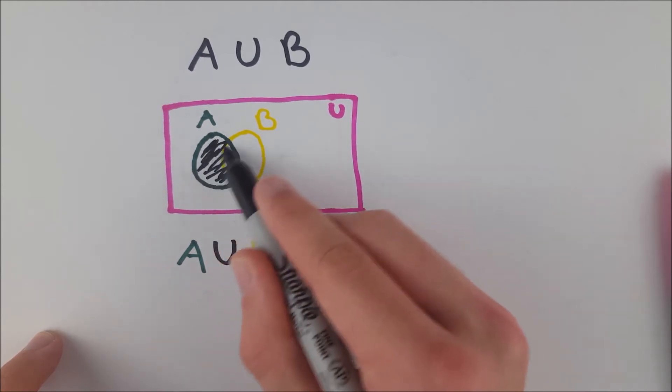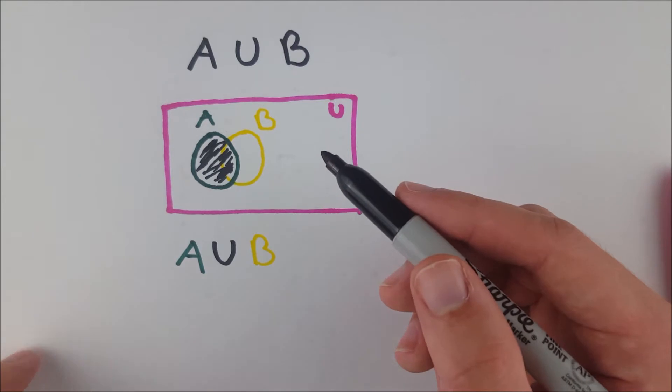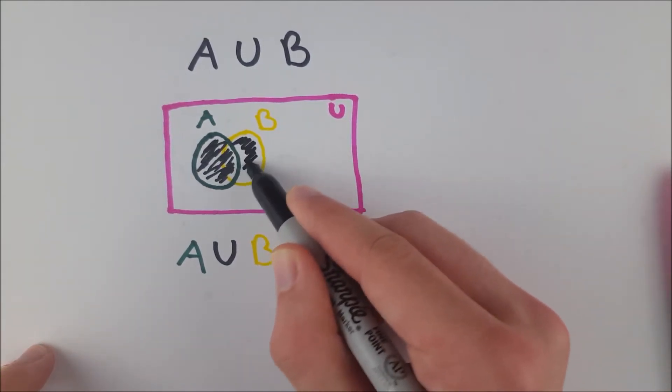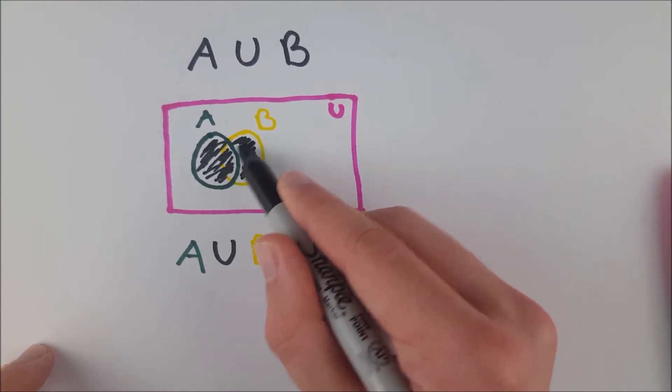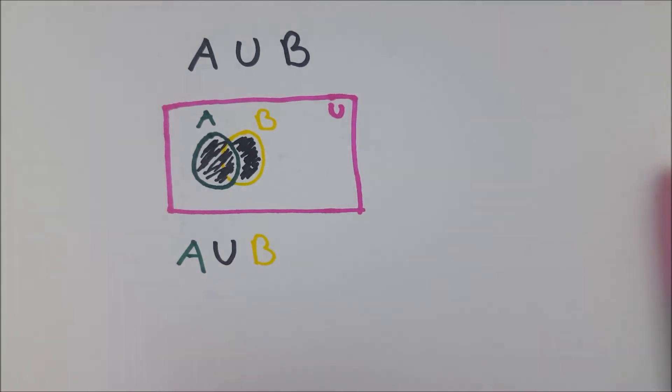That's every element in A, including some in B where they might intersect. And then if it's in B, it is also in A union B. And of course, that gives us everything else. And you can see that is what it looks like. Everything within these two sets gets shaded.